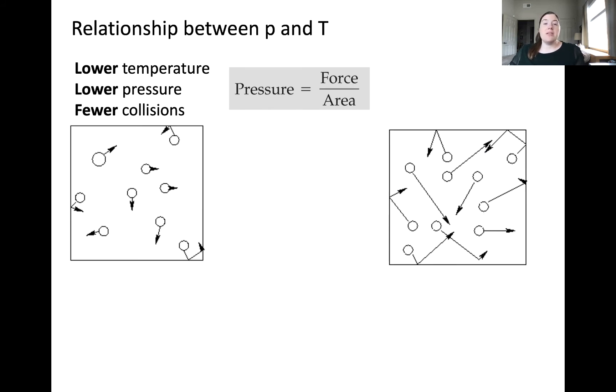Here are two containers of gas with different temperatures. The temperature on the left is lower than the right-hand container, but they're otherwise identical. Make a prediction. What happens to pressure as temperature increases? As temperature increases, we would expect there to be more collisions between the particles and the walls, therefore a higher pressure.